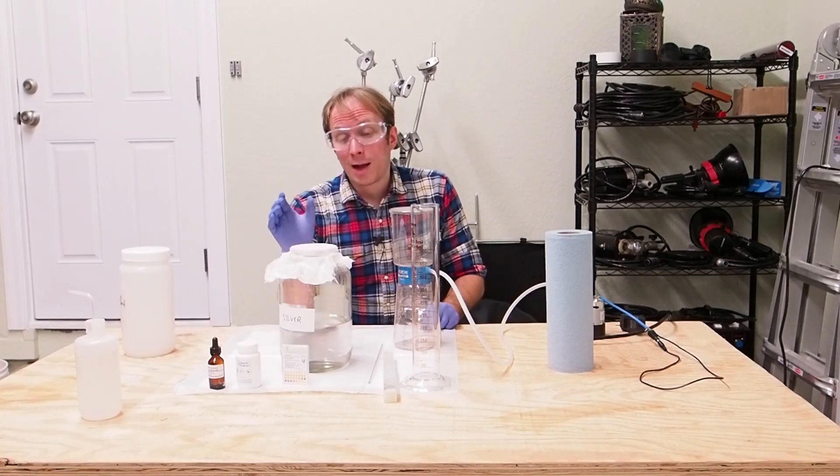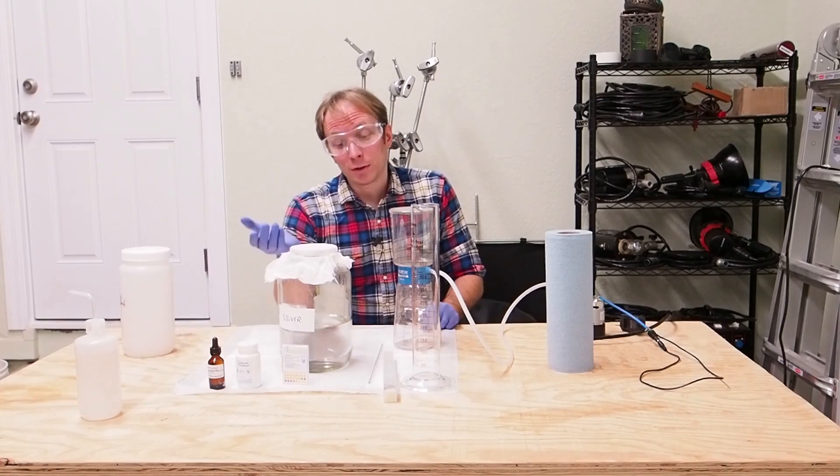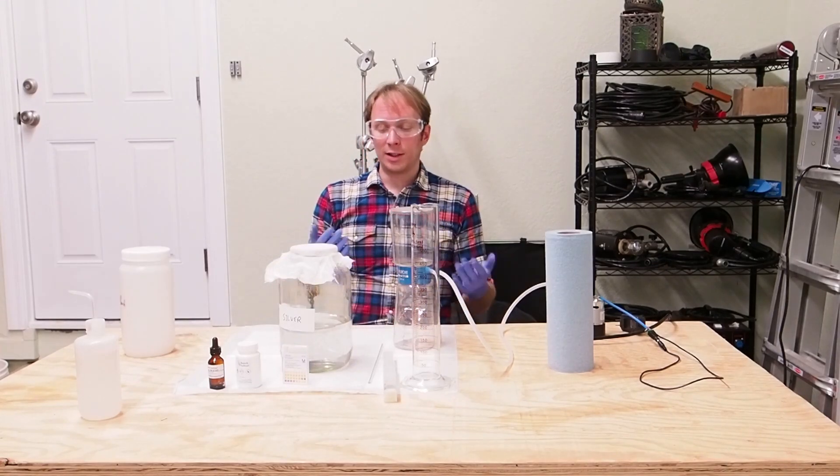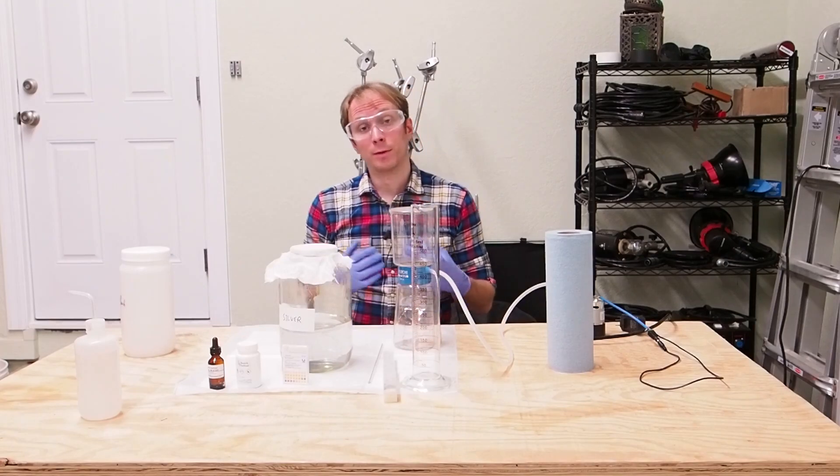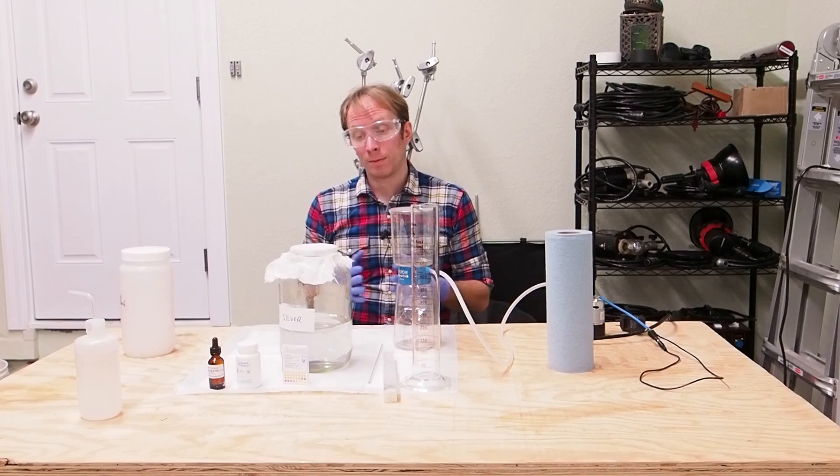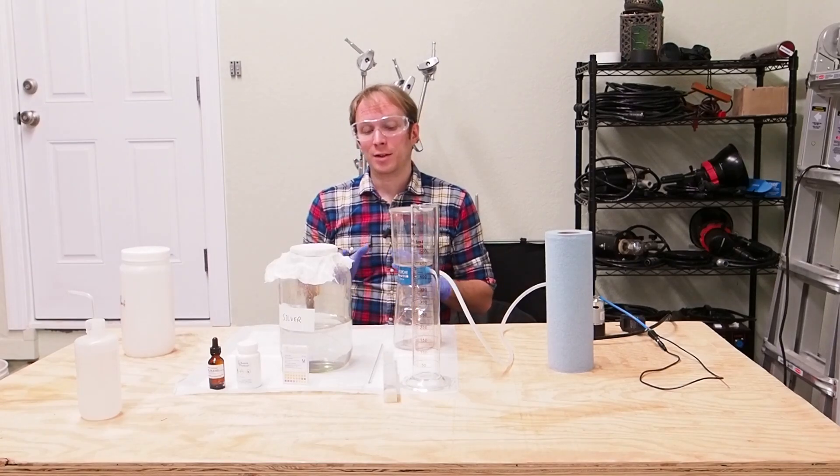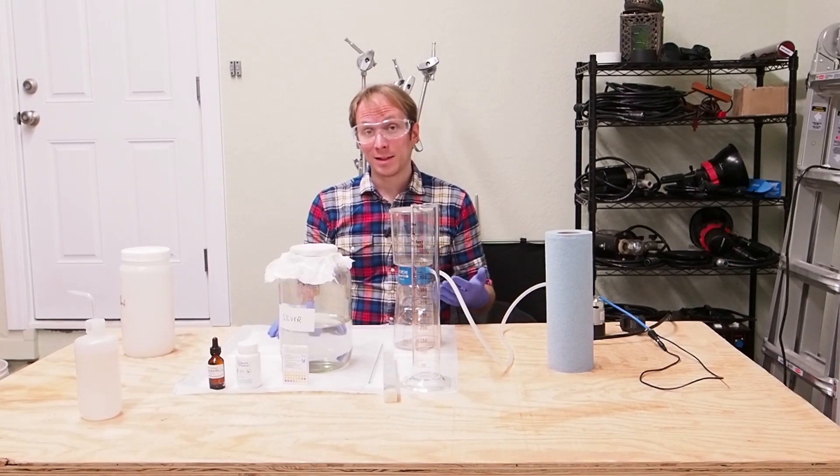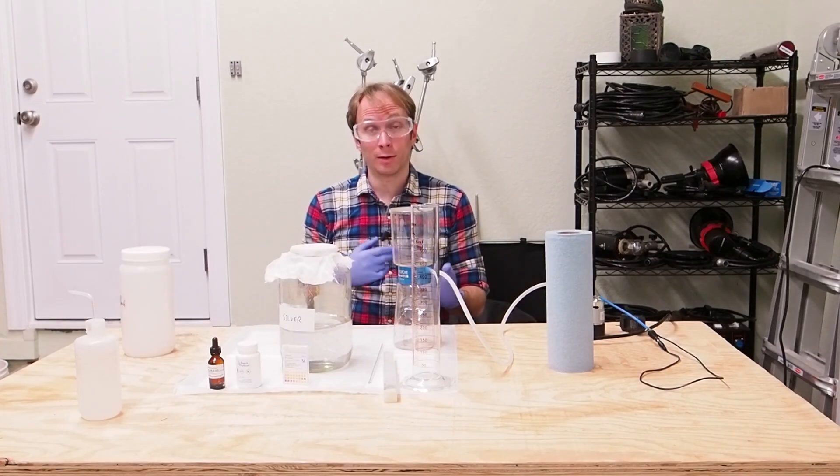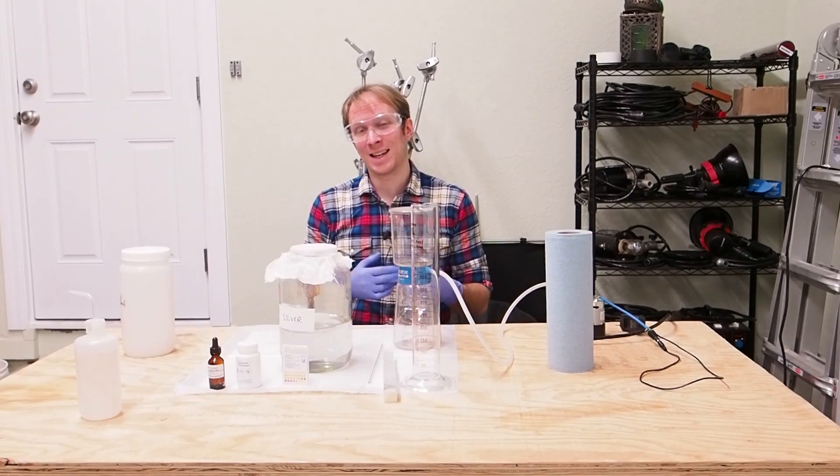So, the first step after you've sunned the bath is to filter it to get all the contaminants out. Now, there are different approaches you can take. You can filter through filter paper in a funnel. You can filter through cotton balls in a funnel. Either of those methods, you might need to make multiple passes. And if that's the case, just keep going, refiltering until your silver bath is nice and clear.